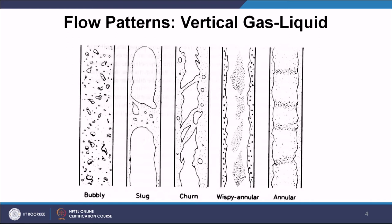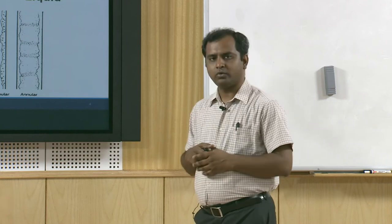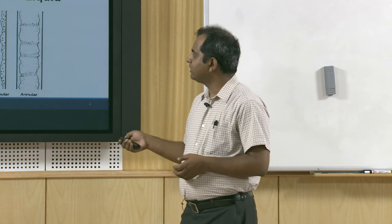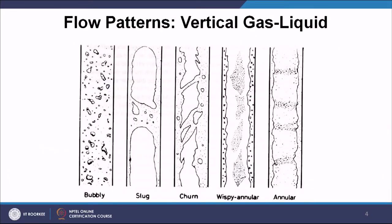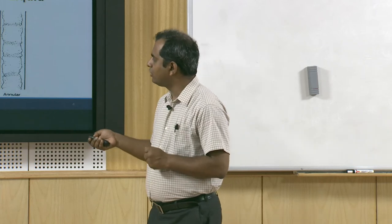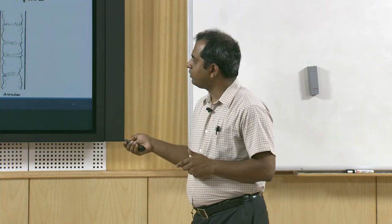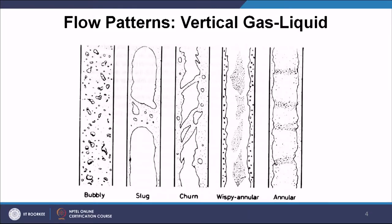When slug flows merge or become very undulated, we find churn flow, characterized by lots of agitation and disturbances between interfaces. When churns merge further, the core of the tube has gaseous phase with dispersed droplets, and the tube wall has a film with bubbles inside — this is called wispy annular flow. If the liquid flow rate increases further, the bubbles disappear from the annular film, leaving an undulated liquid annular film with gas at the core — this is called annular flow.